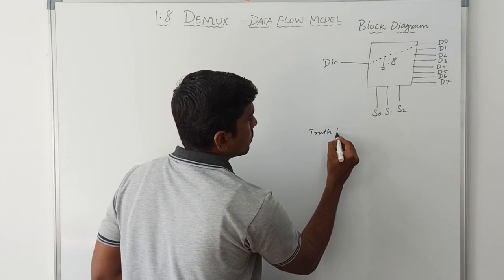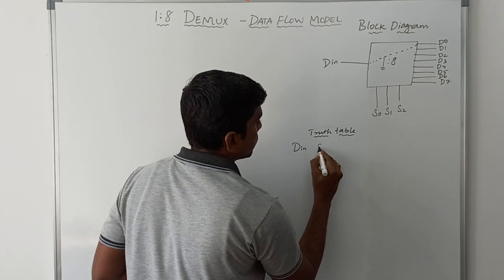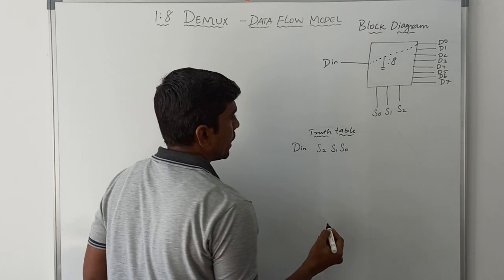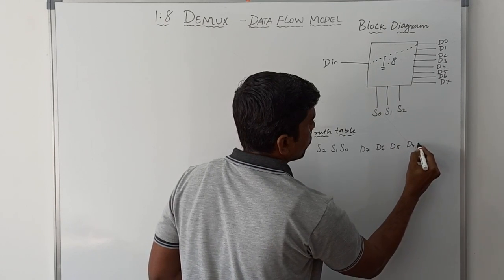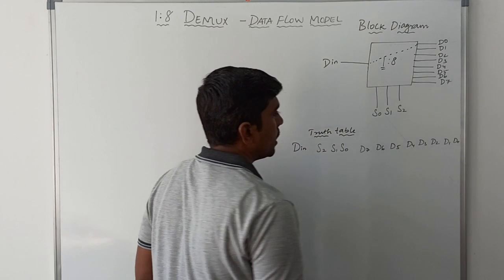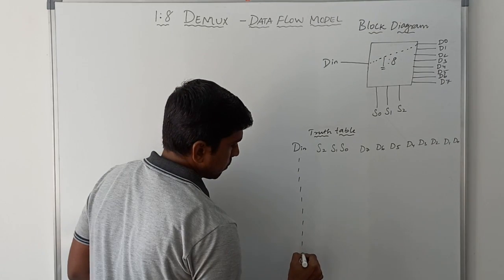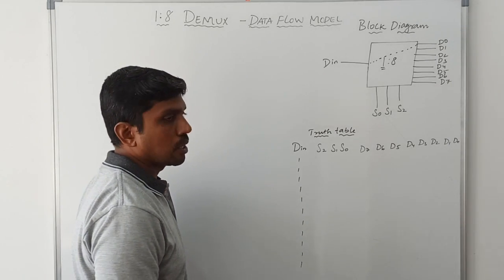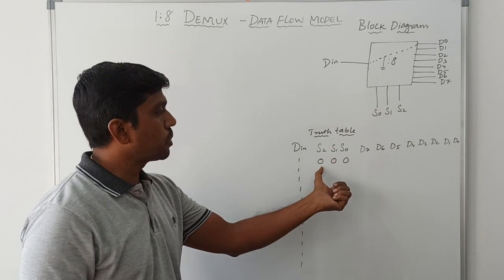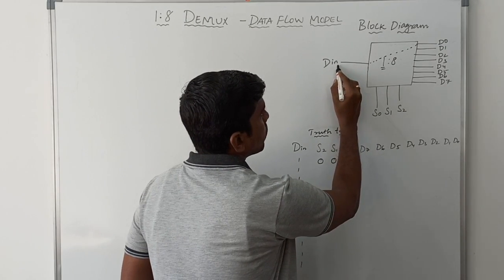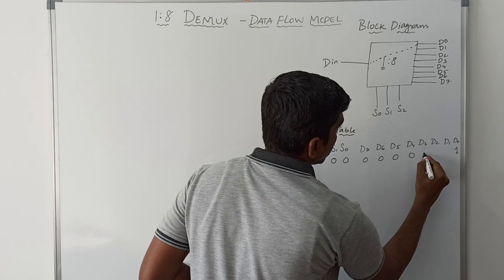Now I will write the truth table. Columns are: Data IN, D4, D3, D2, D1, D0. Let us consider DATA is 1. When all selection line bits are set to 0, the input is connected to D0, so this D0 bit is set to 1 and all remaining bits go to 0.